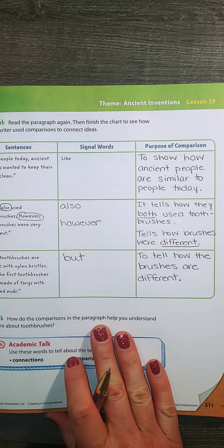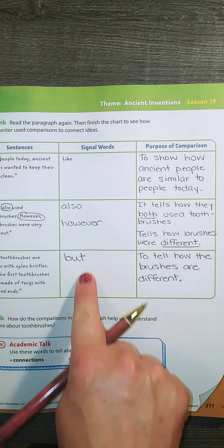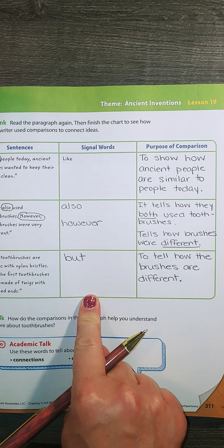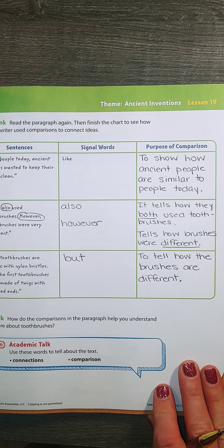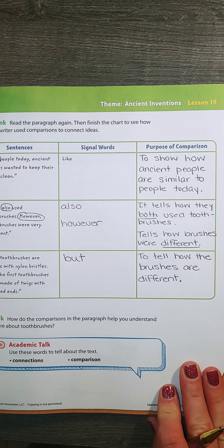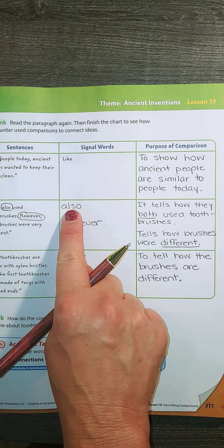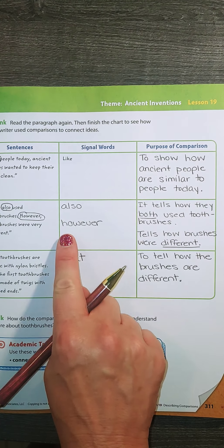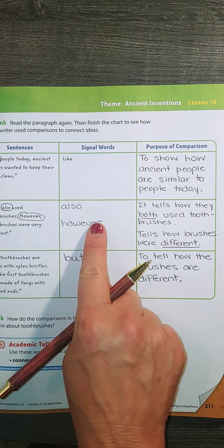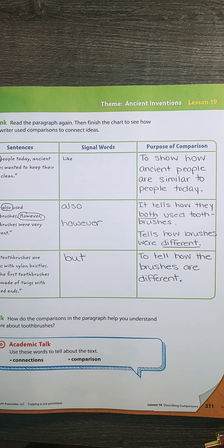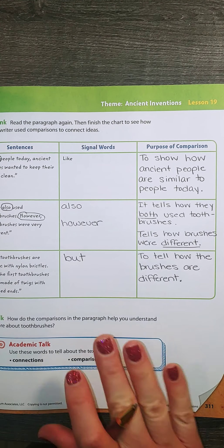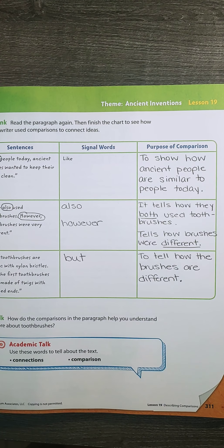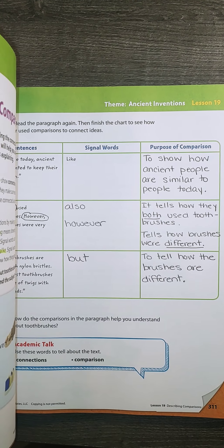So what we do when we read is look for these signal words and then think about: what is it there for? What is it showing us or representing? Is it giving us words like and also that tell me how things are the same? Or is it telling me words like however and but that tell me they are different? Hopefully you have this down. We're going to keep working on comparisons this week.